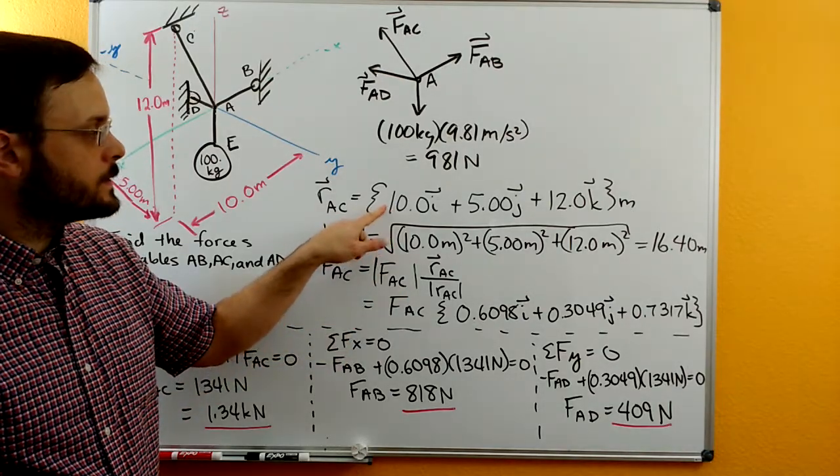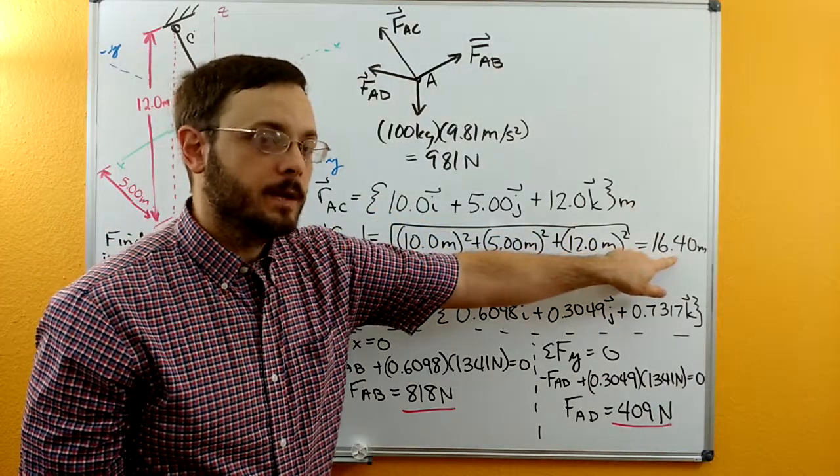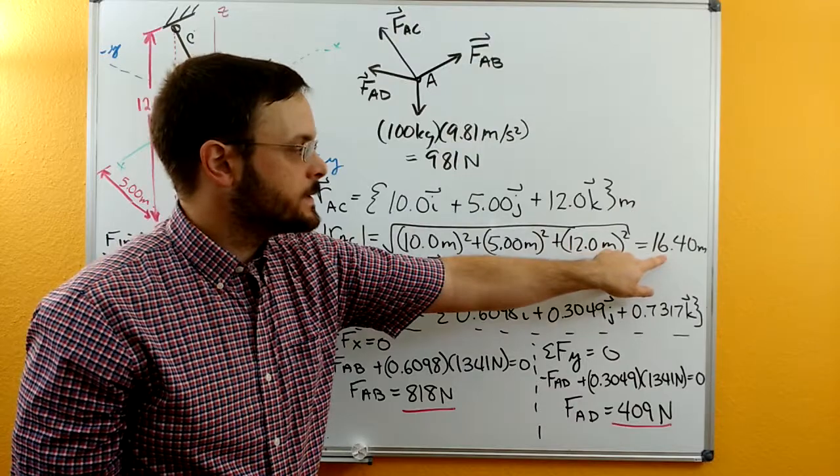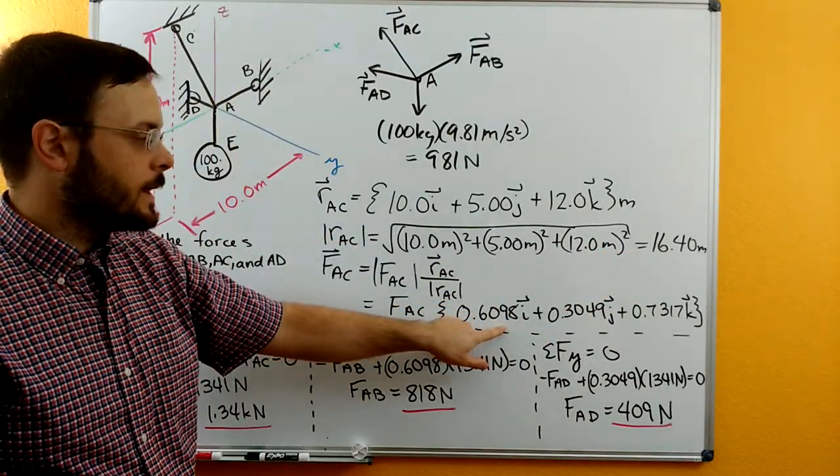take each component. So we take 10 and then divide by the magnitude. So it would be 10 divided by 16.40, and that would sit in front of your I here.